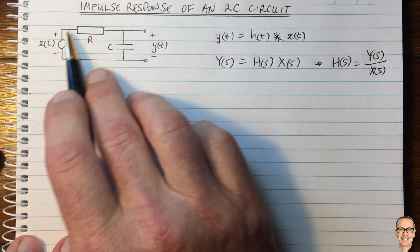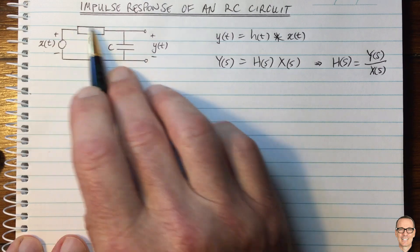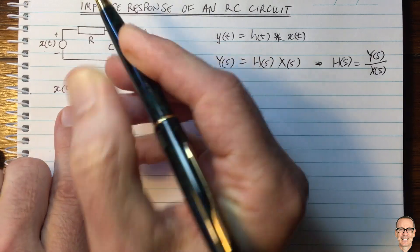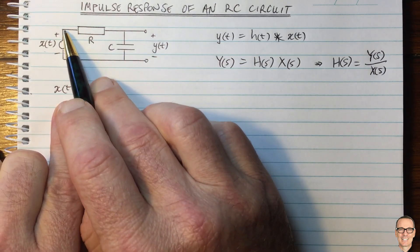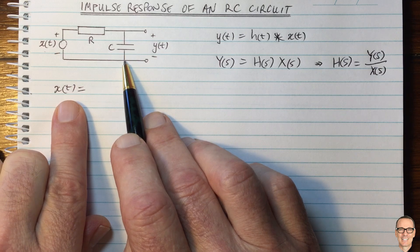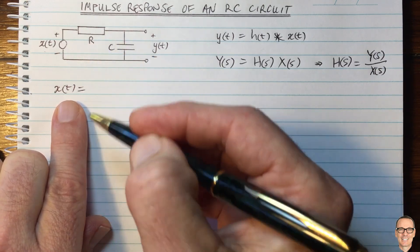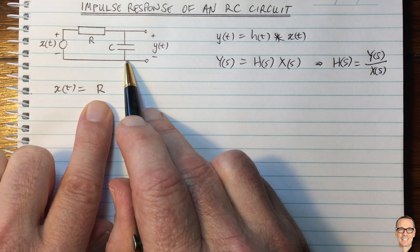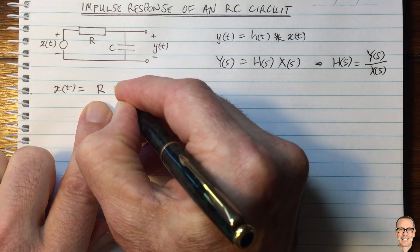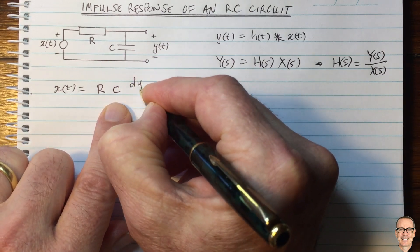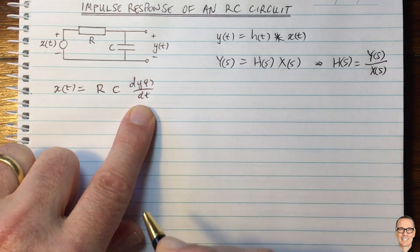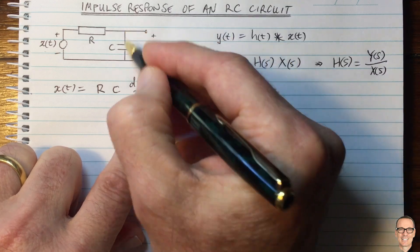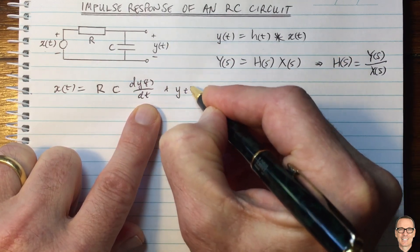We can use standard circuit analysis to look at the voltage drop around this loop. X(t) equals the voltage drop across the resistor plus the voltage drop across the capacitor. Across the resistor it's current times resistance R, and the current is the same current through the capacitor. We know that the current through a capacitor is the capacitance times the derivative of the voltage with respect to time. So this is R times that current — the voltage drop across the resistor — plus the voltage drop across the capacitor, which equals Y(t).